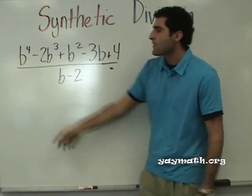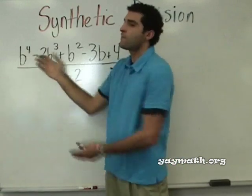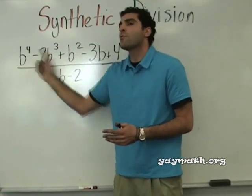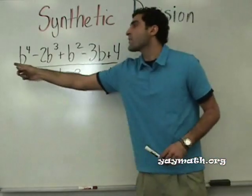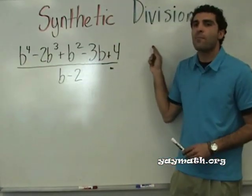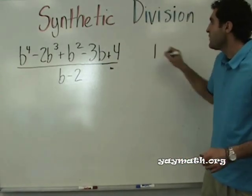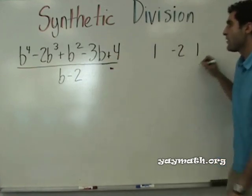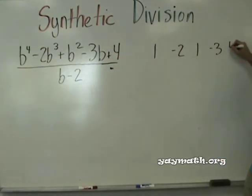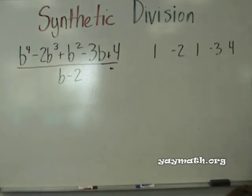In a different problem, if this was 2b to the 4th, that coefficient would be 2. This is 1b to the 4th, so the only difference is the 2 or the 1. What are the coefficients for this top portion? 1, 2, 1, 4. Yes — and I can write these down in order. These are the coefficients in order.